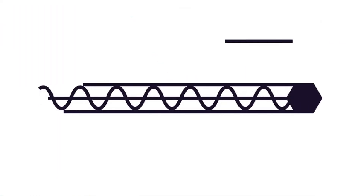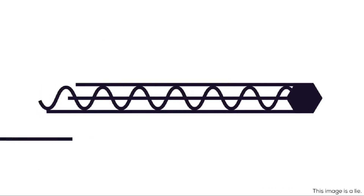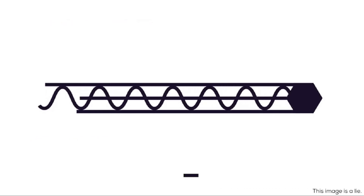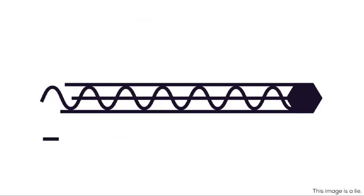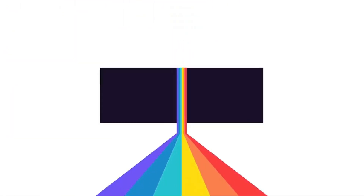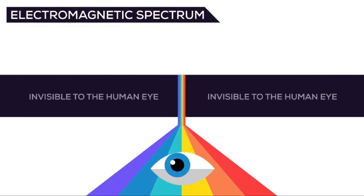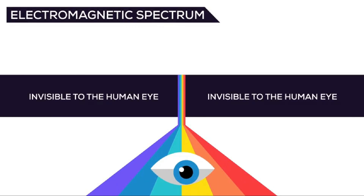Light also has a wave-particle duality, being kind of a particle and a wave at the same time, although this is a simplification. When we say light, we actually mean visible light, which is a tiny part of the electromagnetic spectrum — energy in the form of electromagnetic radiation.